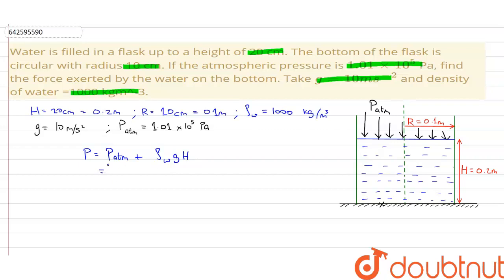Let's calculate it. The p atmospheric is given as 1.01 into 10 to the power 5, plus 1000 into 10 into 0.2 Pascals.